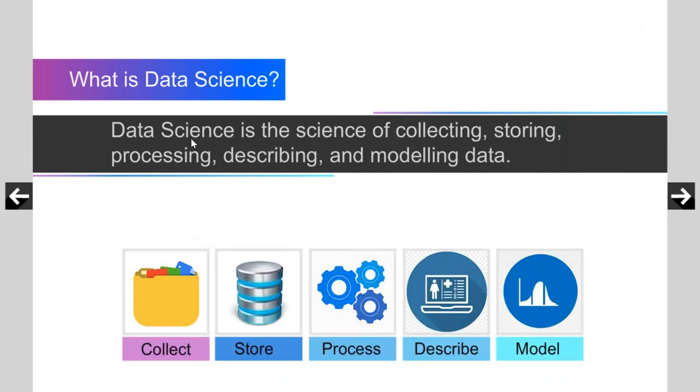Data science is the science of collecting, storing, processing, describing, and modeling data. The same five terms—collect, store, process, describe, and model—are written at the bottom also.